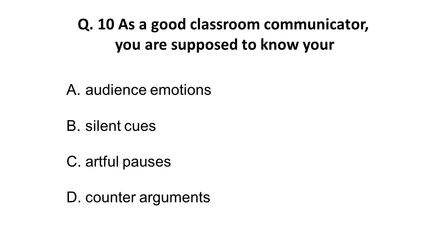Question 10: As a good classroom communicator, you are supposed to know your — A) audience emotions, B) silent cues, C) artful pauses, D) counter arguments. This is from the teaching aptitude section. The correct answer is C: artful pauses. A good classroom communicator should know how to use artful pauses.